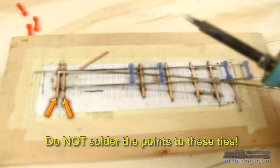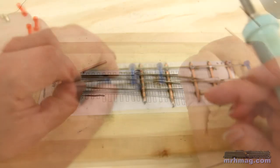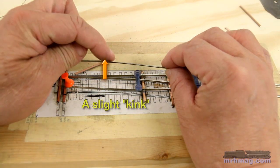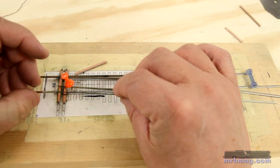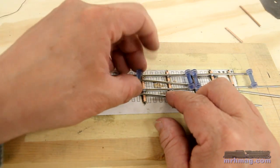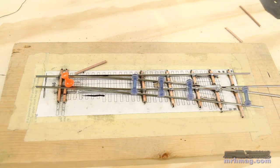Remember the points do not get soldered to the head block ties next to the throw bar. Put a little bend, actually more like a gentle kink, in the curved stock rail where it meets the straight point. Using the rolly holders I locate the curved stock rail and solder it in place.